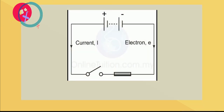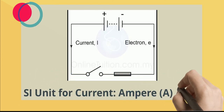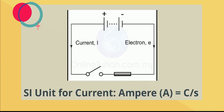In a circuit, current flows from the positive terminal to the negative terminal, while electrons flow from the negative terminal to the positive terminal. The SI unit for current is the ampere. The current at a point is 1 ampere if 1 coulomb of electric charge flows through that point in one second. Therefore, 1 ampere is equal to 1 coulomb per second.